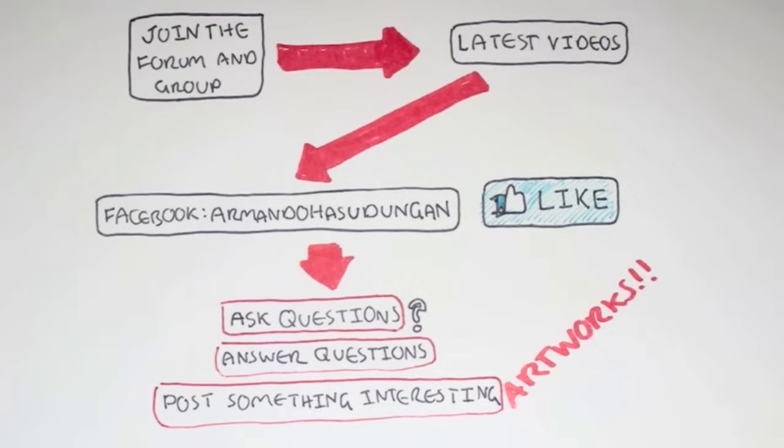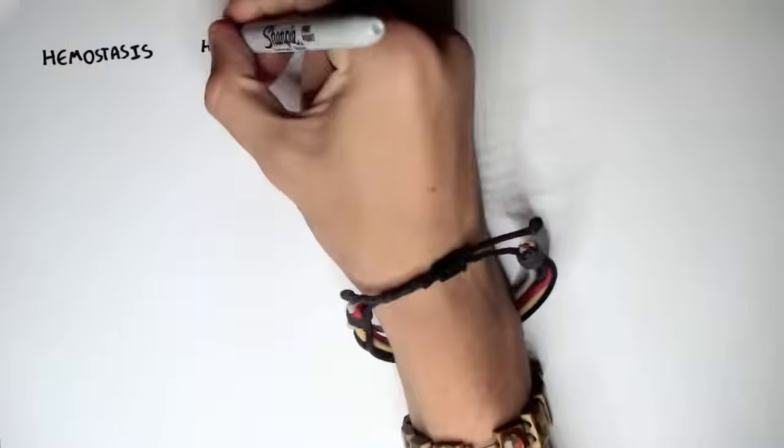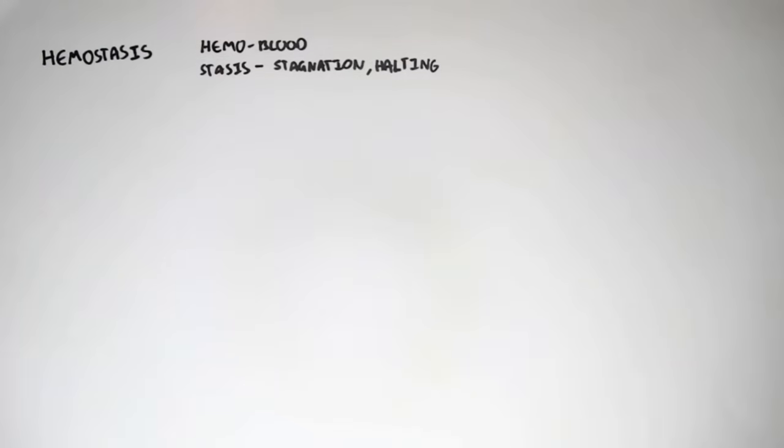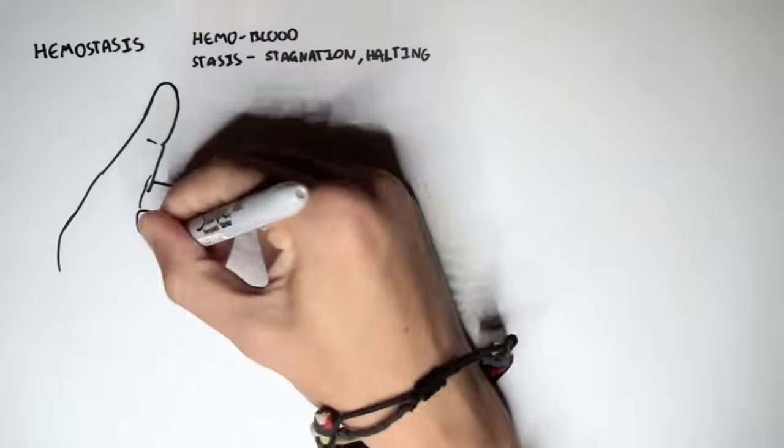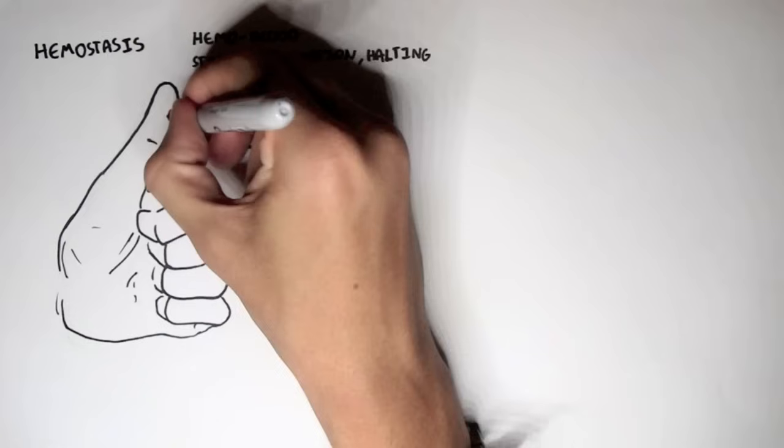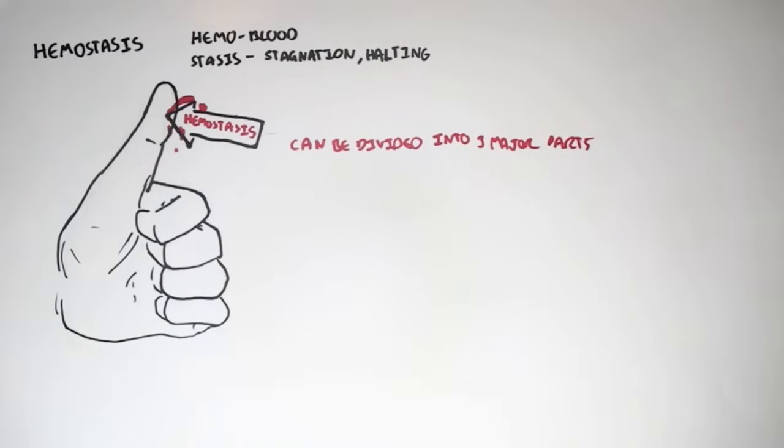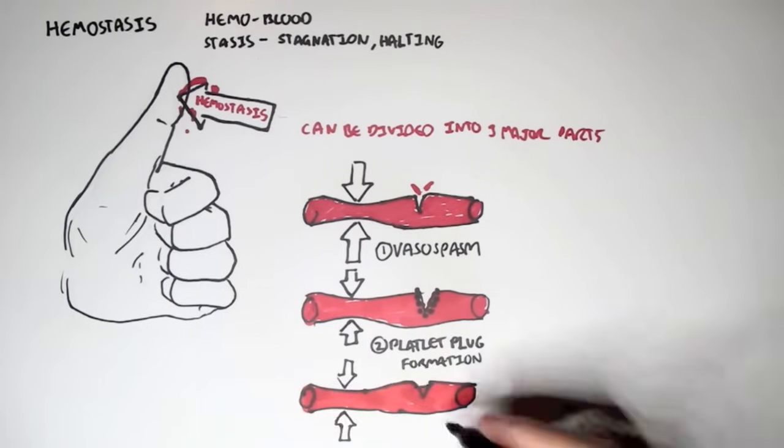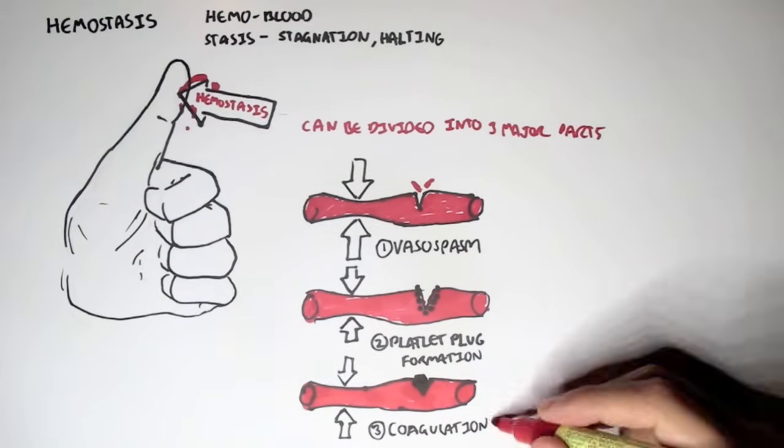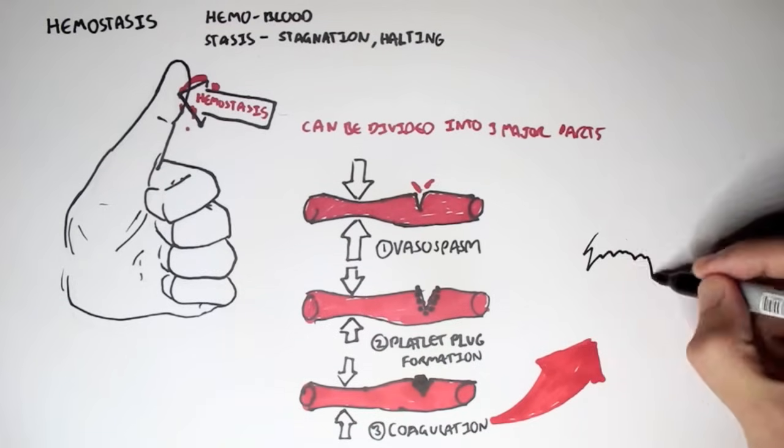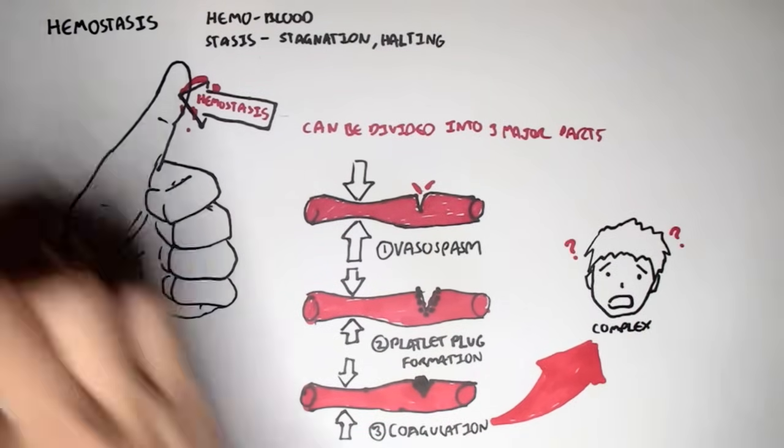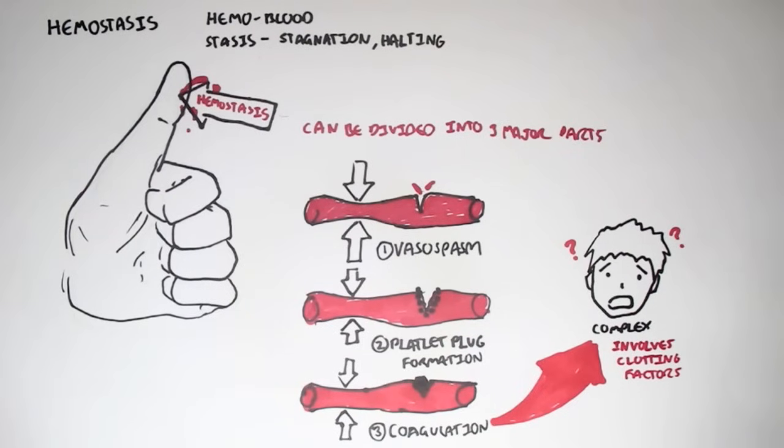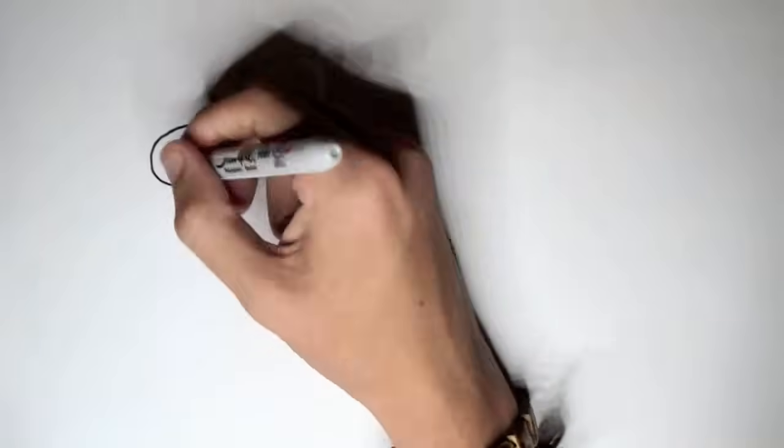And in this video we're going to talk about hemostasis. Now hemostasis comes from the Greek words blood and stagnation, or halting. And hemostasis can essentially be divided into three major parts: vasospasm or vasoconstriction, platelet plug formation, and coagulation. Now these three steps are important to know. The coagulation cascade is a bit more complex and involves various chemicals known as clotting factors. But we won't go into that, we'll just look at the overview of hemostasis and the three processes shown here.